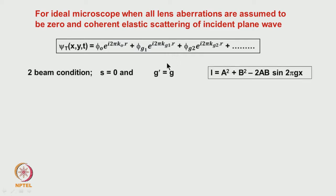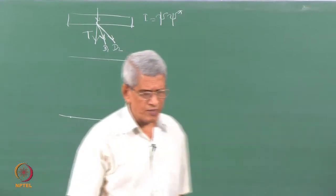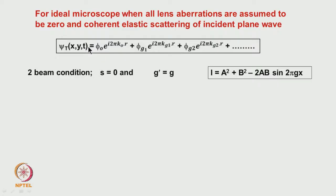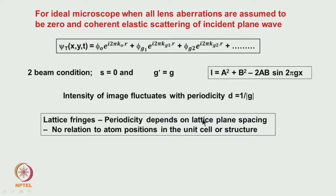We then considered the two-beam condition where only the transmitted beam and one diffracted beam are present. The intensity fluctuates with respect to g, the reciprocal lattice spacing. The intensity is psi·psi-star, and the phase factors cancel, so in the intensity the phase information about the sample is lost. Though we get intensity fluctuations reflecting periodicity, how atoms are arranged in that plane is totally lost.